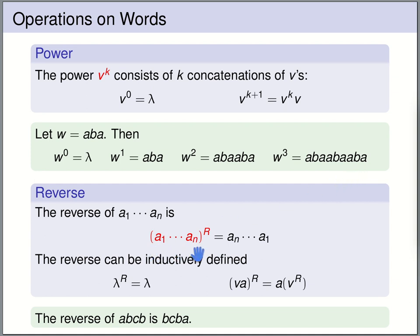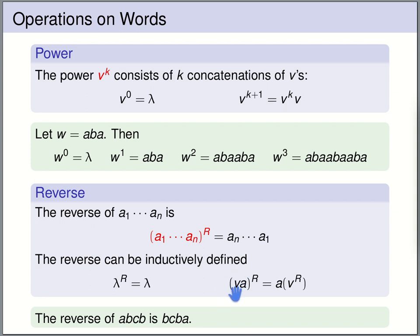The reverse of a word a1 up to an is the mirror image of the word — reading the word from right to left. If we take the reverse of a1 up to an, we get an, an-1, down to a1. Again, the reverse can be defined inductively: the reverse of the empty word is just the empty word, and the reverse of a word va is the word starting with a followed by the reverse of v. For instance, the reverse of the word abcb is bcba.